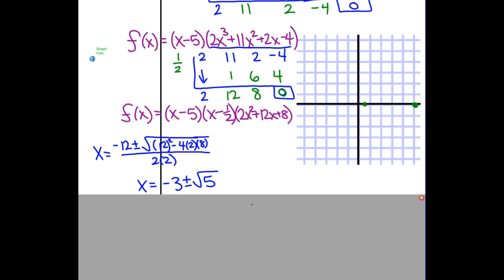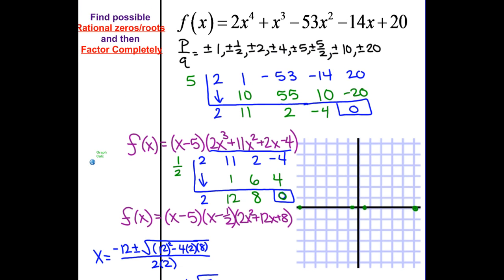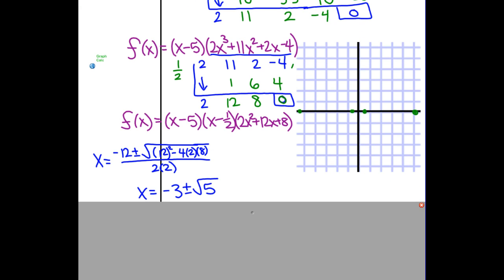Now we need to graph this. We have a couple of good points that are easy to graph: x equals 5 and x equals one half. For x equals negative 3 plus or minus the square root of 5 — the square root of 5 is close to 2, so negative 3 plus that is close to negative 1, and negative 3 minus that is a little past negative 5. Since it's a positive leading coefficient and even degree, we start up and end up. We come around through those zeros and end back up — that's a sketch of what my graph should look like.